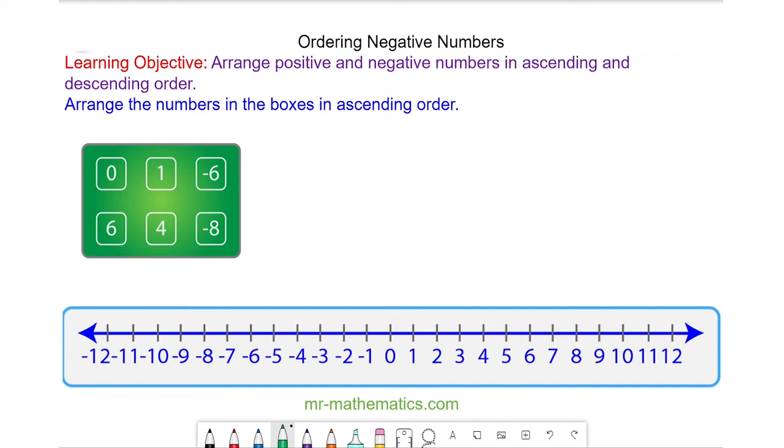Welcome to our lesson on ordering negative numbers. We're going to arrange these numbers in the green box in ascending order. That means from smallest to biggest.